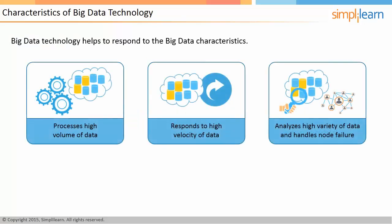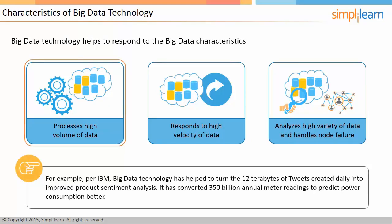Big data technology helps respond to big data characteristics. Firstly, it helps to cost-effectively process growing volumes of data. For example, per IBM, big data technology has helped turn the 12 terabytes of tweets created daily into improved product sentiment analysis, and has converted 350 billion annual meter readings to better predict power consumption.